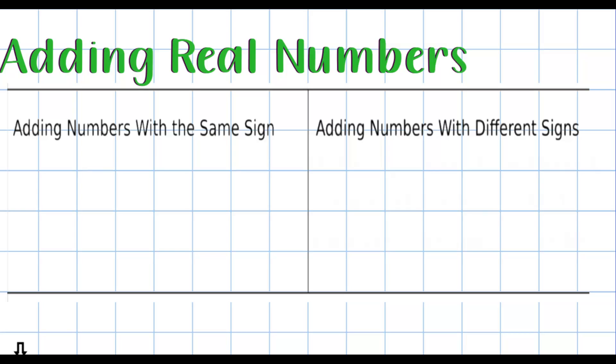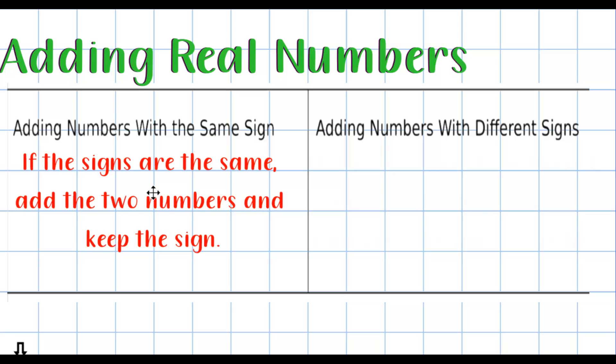When you add two real numbers together, there's two different possibilities. The first possibility is that both of the numbers will have the same sign, and when that's the case, you just simply add the numbers together and keep the sign.